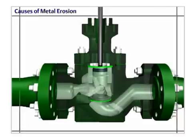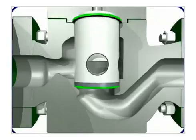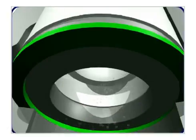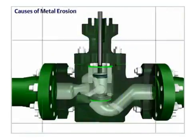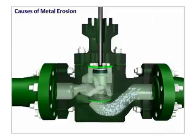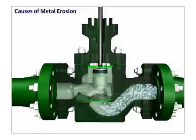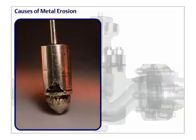Wherever there's a restriction in flow, the decrease in pressure can cause a fluid to reach its vapor point. Flashing occurs when the fluid vaporizes and remains a vapor. Metal erosion caused by flashing appears smooth and shiny.